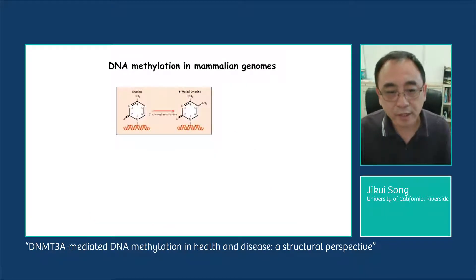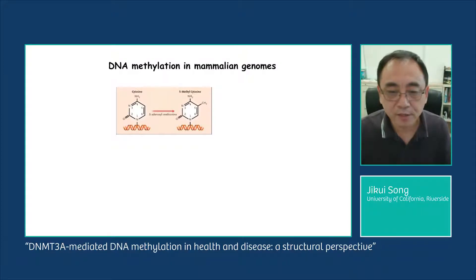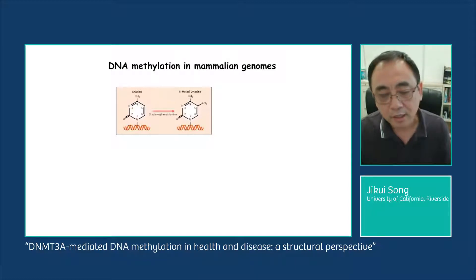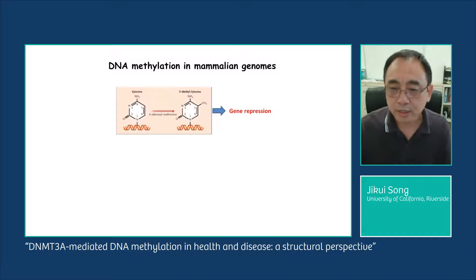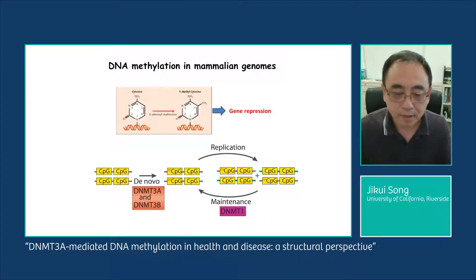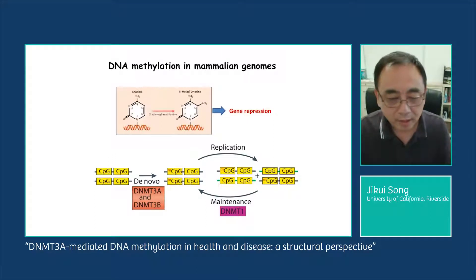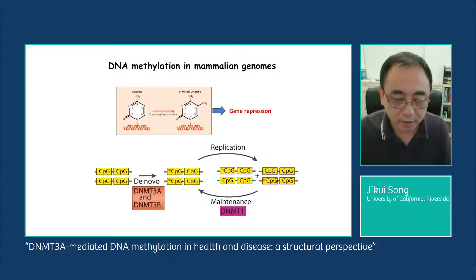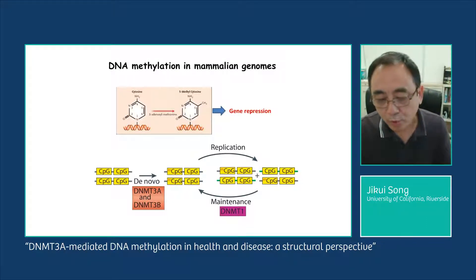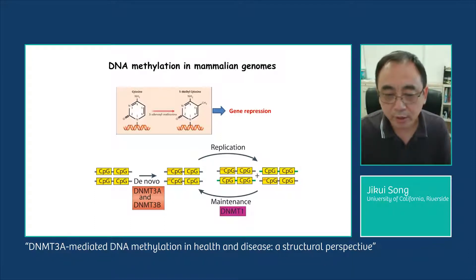One such modification is DNA methylation. In mammals, methylation mainly occurs at the C5 position of cytosine within the CpG dinucleotide context. The primary consequence of methylation is to mediate gene repression. Establishment and maintenance of methylation is achieved by two groups of enzymes: DNMT3A and DNMT3B, responsible for de novo methylation, while DNMT1 mediates maintenance of methylation patterns during DNA replication.